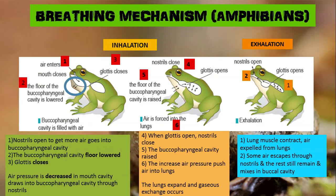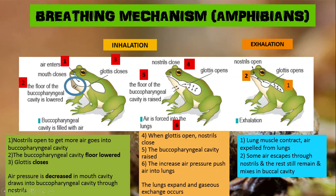Next, we are going to discuss about the breathing mechanism in amphibians. It starts from the nostril opening to get air into the buccal pharyngeal cavity. The buccal pharyngeal cavity floor will lower and the glottis will close, so the air pressure is decreased in the mouth cavity, drawing air into the buccal pharyngeal cavity through the nostrils. When the glottis opens, the nostril closes, then the buccal pharyngeal cavity raises, and the increased air pressure pushes the air into the lungs.